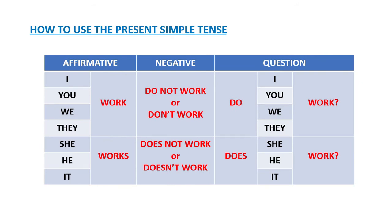Now we have to understand how to use the present simple tense. The present simple tense can be used in affirmative, negative, and in questions. We use the verb 'work' to explain that situation. In the affirmative way, you can say: I work, you work, we work, they work. She works, he works, it works.